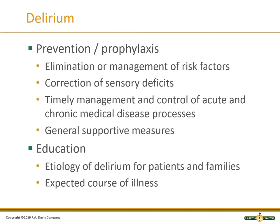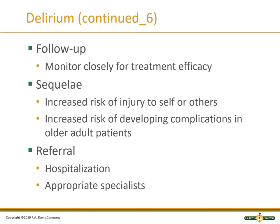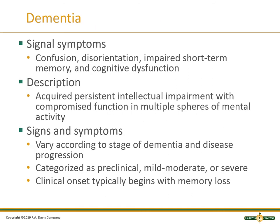Prevention and prophylaxis is the elimination or management of risk factors, correcting sensory deficits, general supportive measures, and educating the patient and families on the etiology and expected course of the illness. We monitor for treatment efficacy, check if they're improving, and assess increased risk of injury to self or others. We also assess whether hospitalization is needed, significant abnormalities, and when to refer to other specialists.